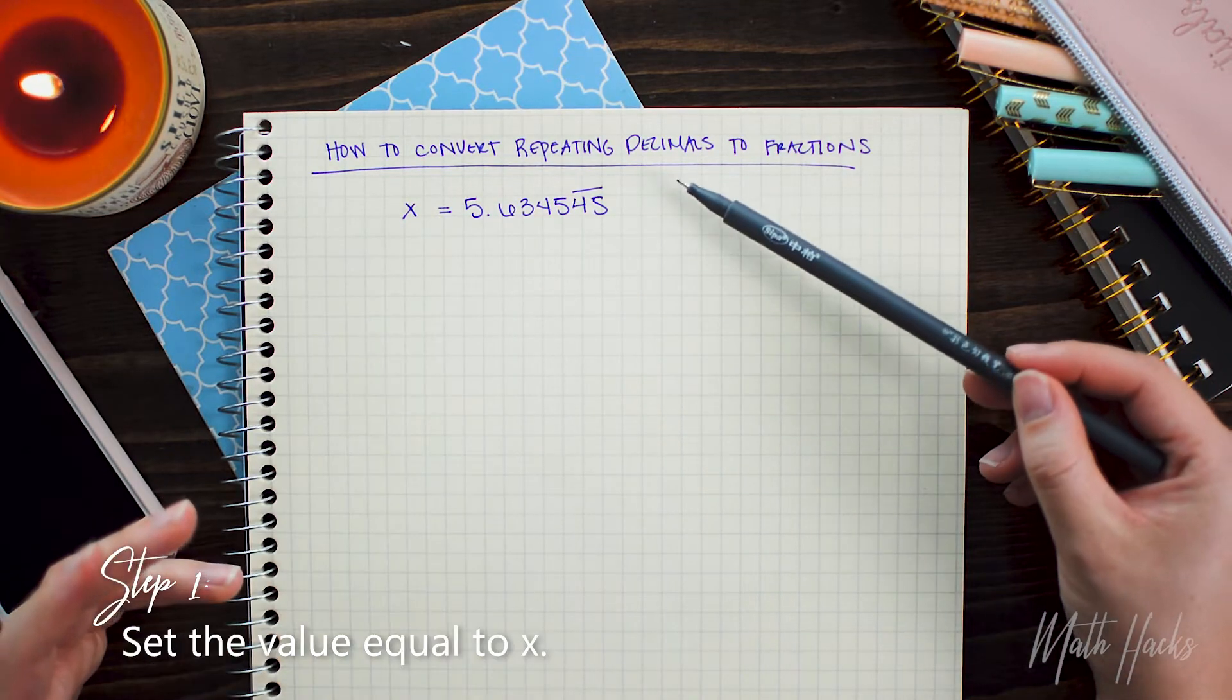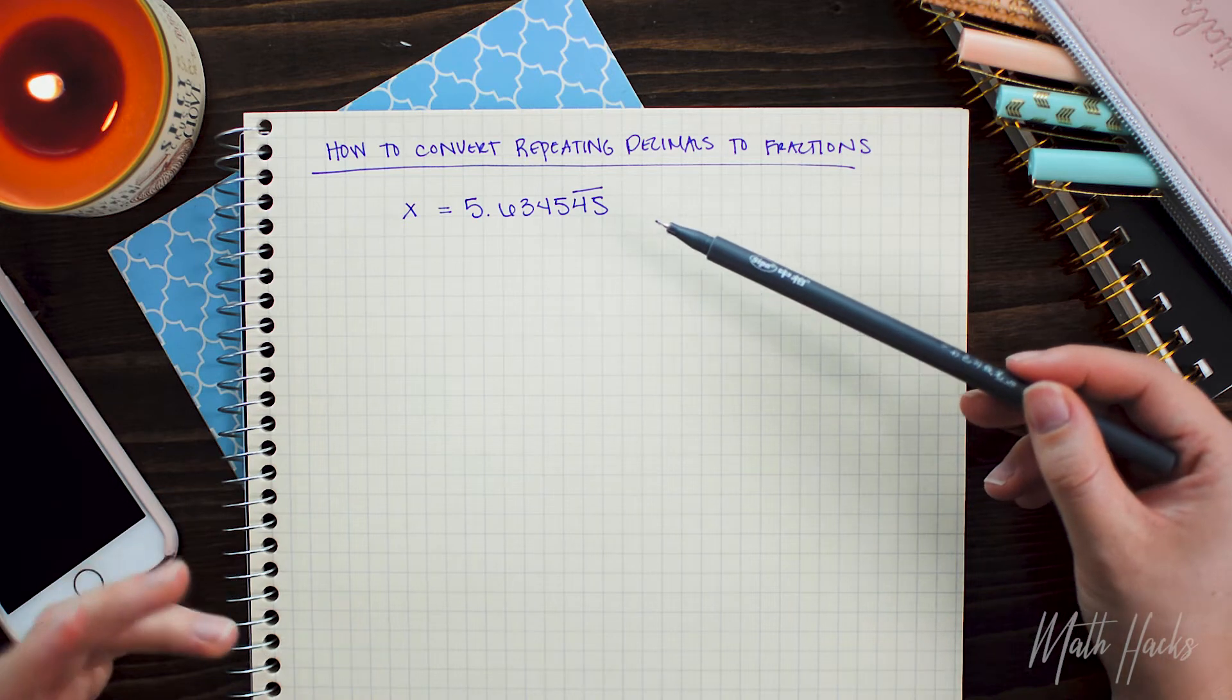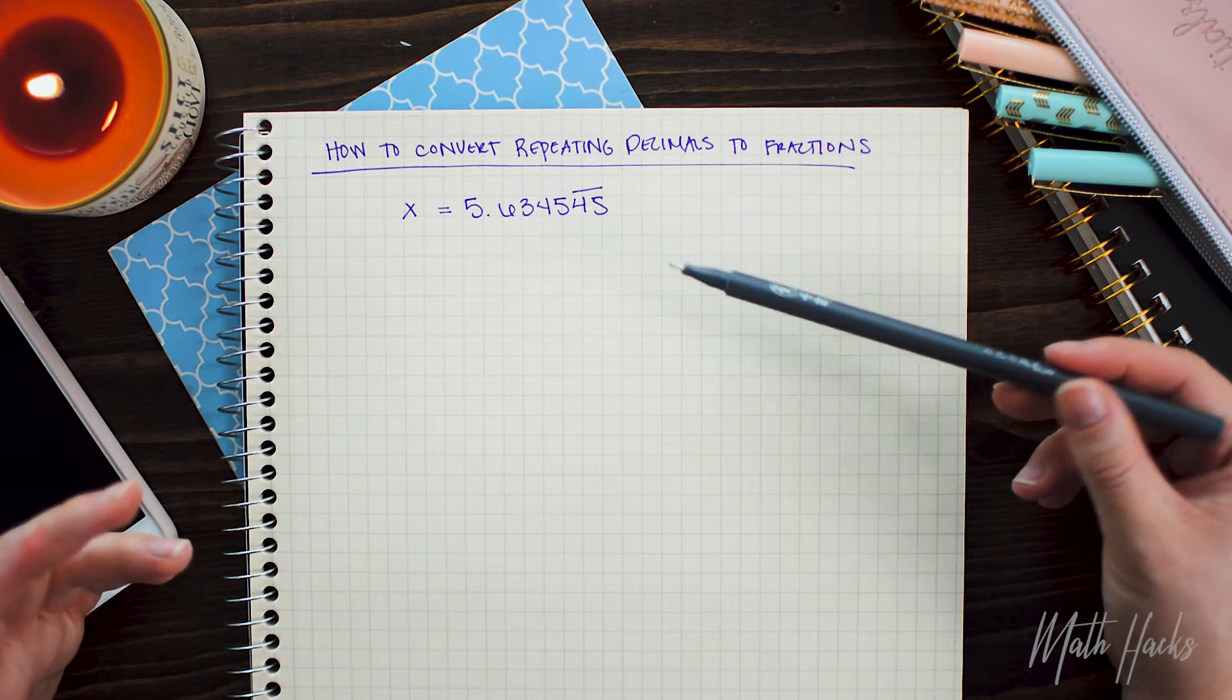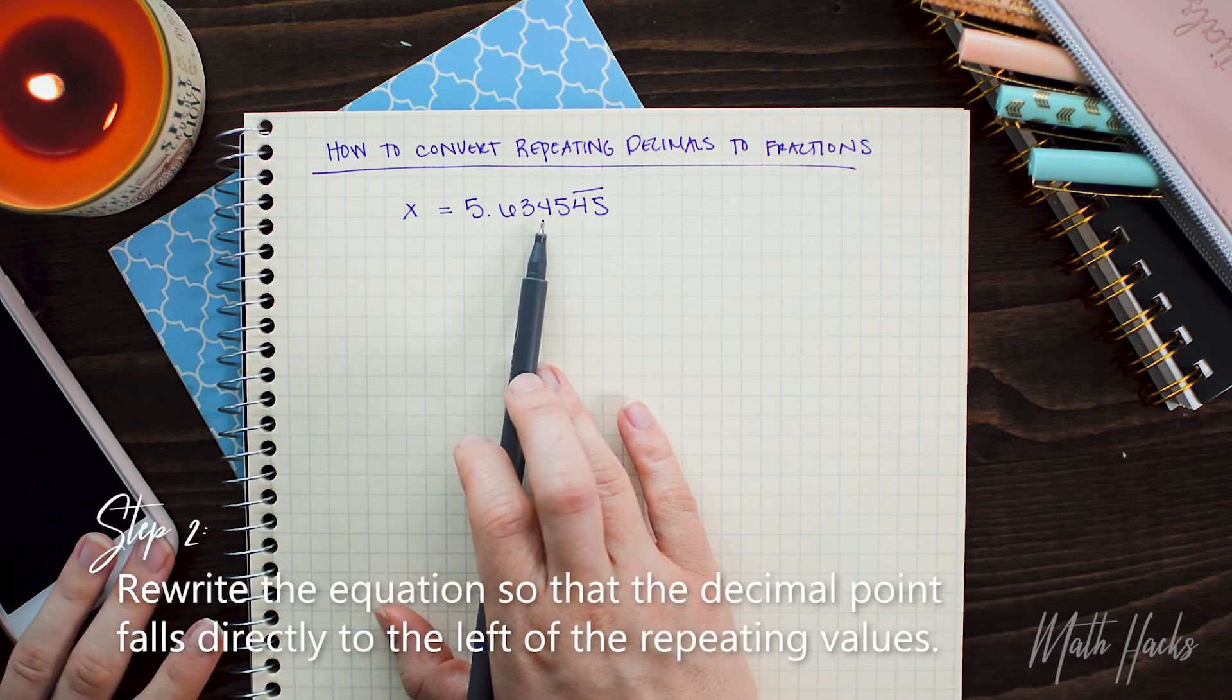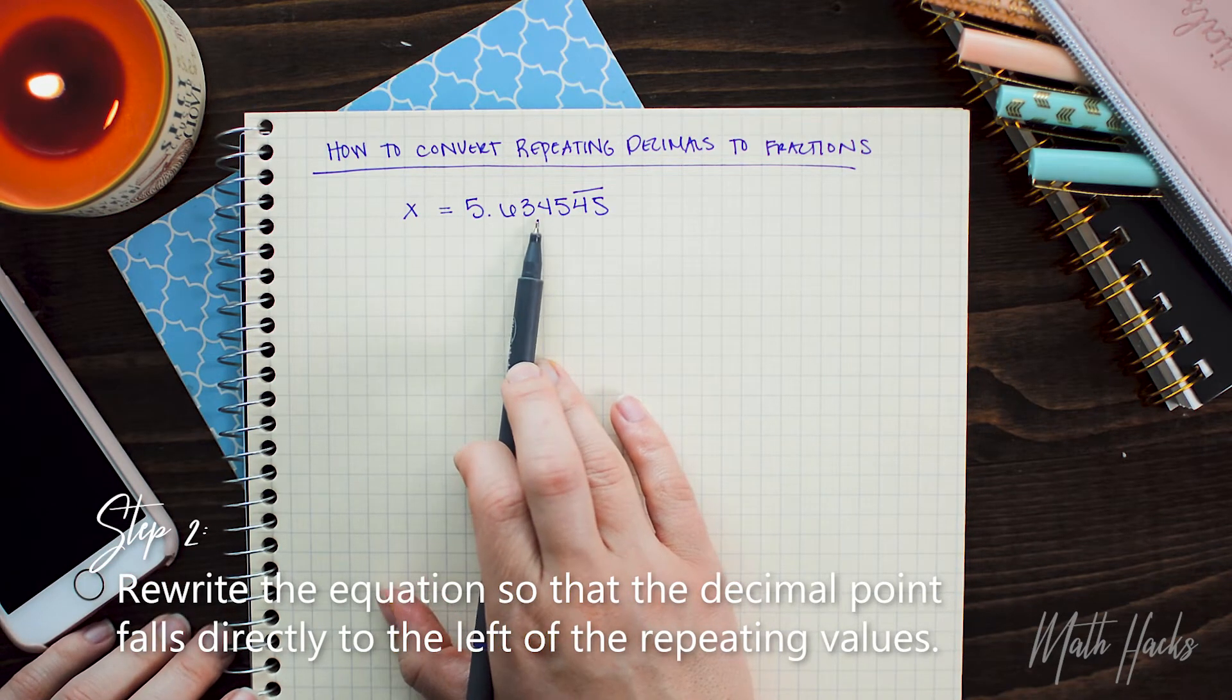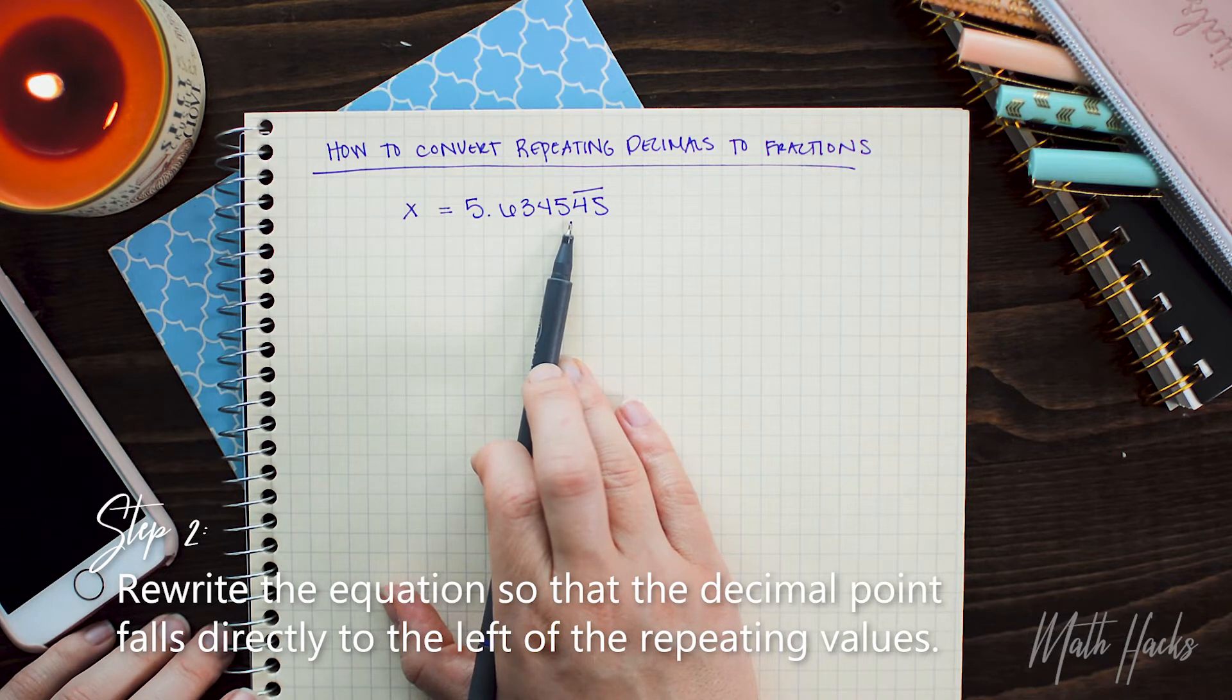We're going to convert this equation into two separate equations. The first one, I want to rewrite the equation so that the decimal place falls directly to the left of the first set of repeating decimals. So in this problem, the first set of repeating decimals is this 45 right here. So I need to ask myself...